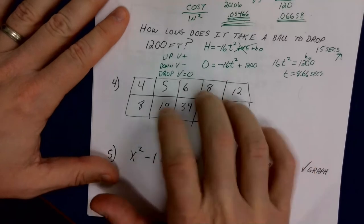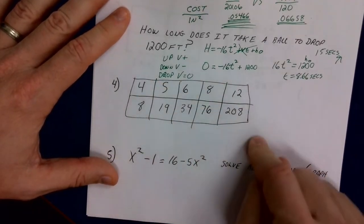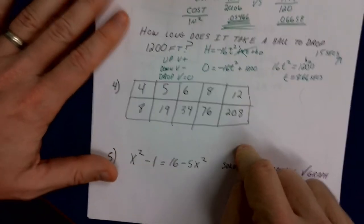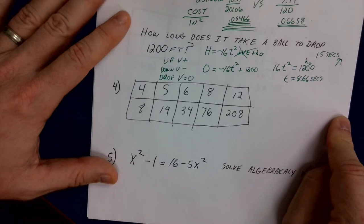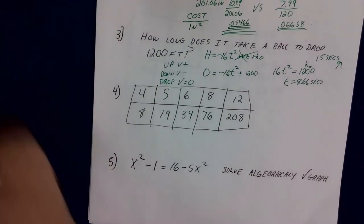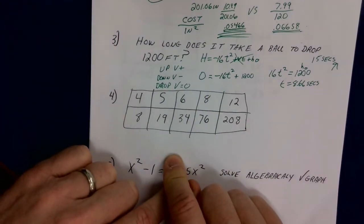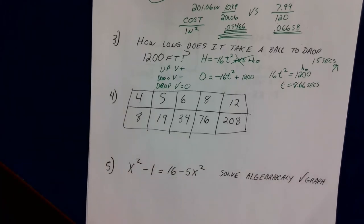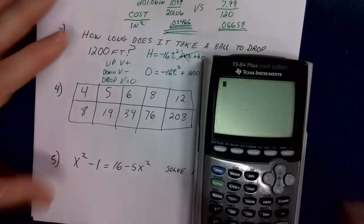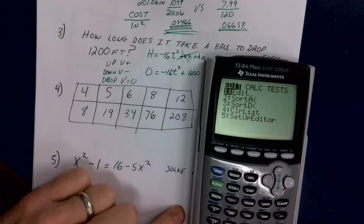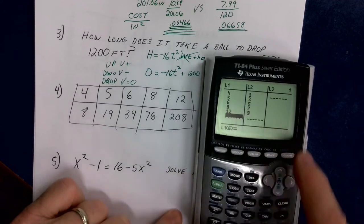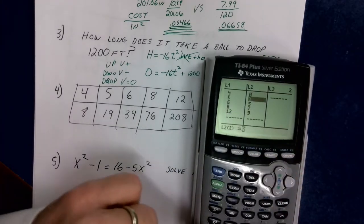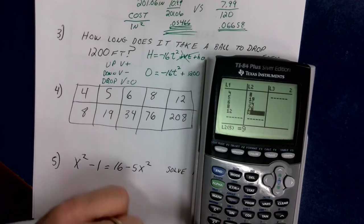So this is data again — I want you to try and take this data and stick it in your graphing calculator. Pause the video, enter it, look at the data, and determine: is it a line, a parabola, a cubic, or something else? Stop the video now and enter it. So I'm going to go to STAT → EDIT and put in the data: x-values 4, 5, 6, 8, 12 and y-values 8, 19, 34, 76, 208. Notice I jumped a few on the x's so they weren't going up by ones each time.